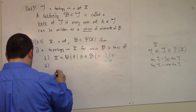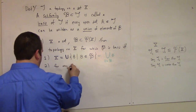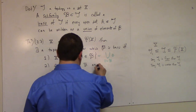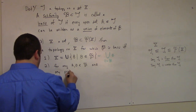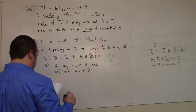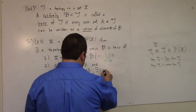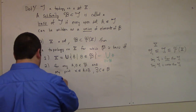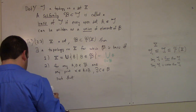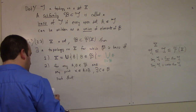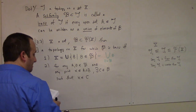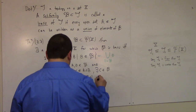Condition two: for any pair A, B in the basis, and any point X in the intersection, there exists C in the basis such that C is a subset of the intersection of A and B.